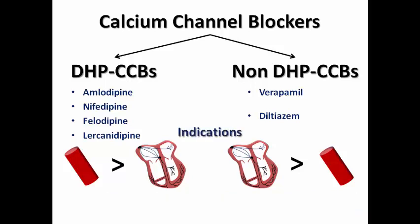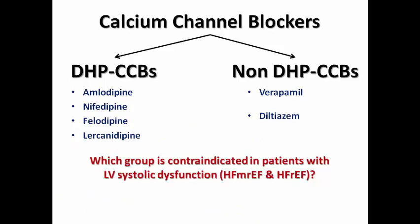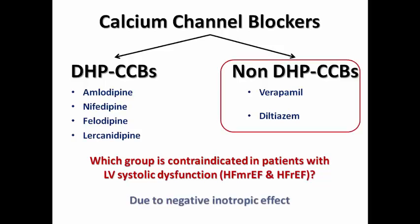DHPs act mainly on vascular smooth muscle cells, resulting in predominantly vasodilator effects, whereas non-DHPs act predominantly on the heart, producing negative inotropic, chronotropic, and dromotropic effects. That's why DHPs are mainly indicated for hypertension, while non-DHPs are used for tachyarrhythmias or hypertrophic cardiomyopathy with LVOT obstruction. Non-DHPs are absolutely contraindicated in LV systolic dysfunction due to their negative inotropic effect.